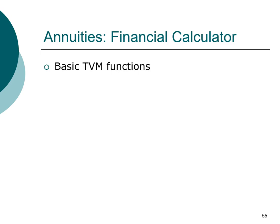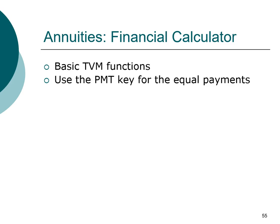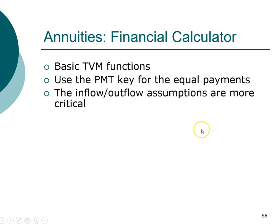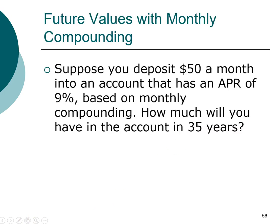We'll rely on the financial calculator for annuity problems using the basic time value of money functions. One additional key we introduce is PMT, or the payment key, which represents the annuity payments. When working with annuities, the input/output assumptions become more important. For example: you deposit $50 a month into your account at an APR of 9% based on monthly compounding — how much will you have after 35 years?